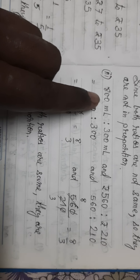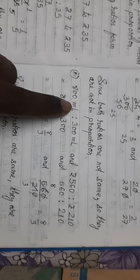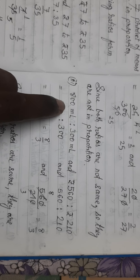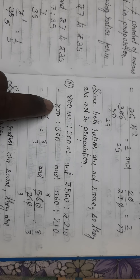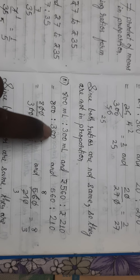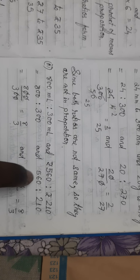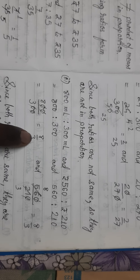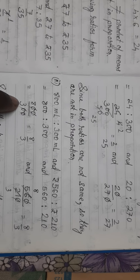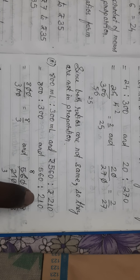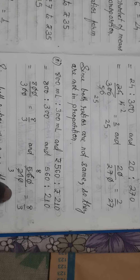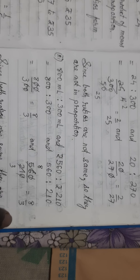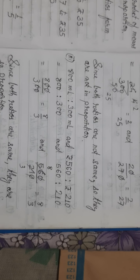Part 3: 800 milliliters to 300 milliliters, and Rs. 560 to Rs. 210. Both units are the same within each ratio, so no conversion is needed. The ratios are 800 to 300 and 560 to 210. Converting to fraction form and cancelling, 800/300 simplifies to 8/3, and 560/210 also simplifies to 8/3. Both ratios have the same value, so these two ratios are in proportion.